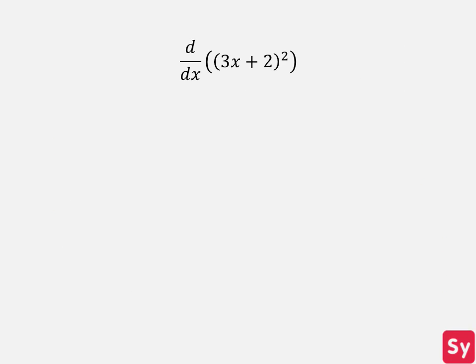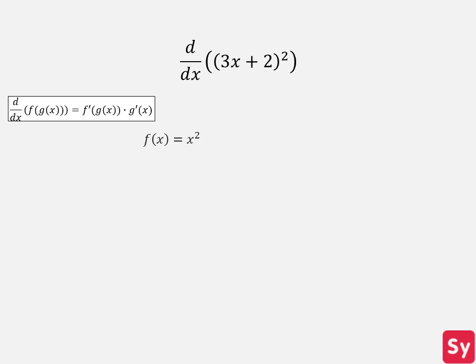Let's see some examples. First example, we want to compute the derivative of 3x plus 2 squared. We can see that we have to use the chain rule since the function is a composition of f of x and g of x. We see that the outer function f of x is equal to x squared and the inner function g of x is equal to 3x plus 2.